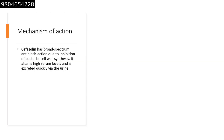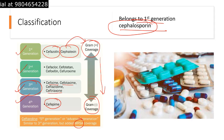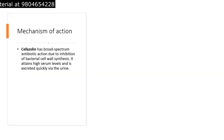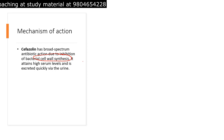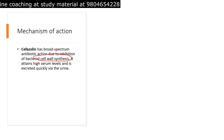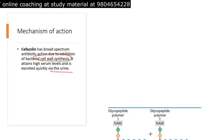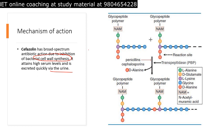The mechanism of action of cefazolin involves inhibition of cell wall synthesis. By inhibiting bacterial cell wall synthesis, the antibiotic becomes bactericidal in nature — it kills the bacteria by not allowing them to live and grow without a cell wall. Cefazolin also attains high serum levels and is excreted quickly via the urine.